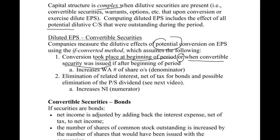If conversion took place, it increases the number of shares outstanding because the bonds would have been converted into common stock, increasing our denominator. Dealing with bonds — if we converted them at the beginning of the year, there would not have been any bonds outstanding, so we would not have had that interest expense. We need to add that interest back, net of tax. We'll see the preferred stock effect in the next video.